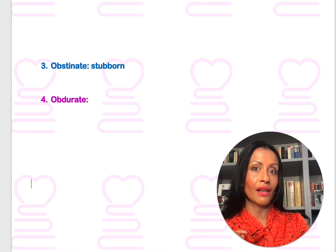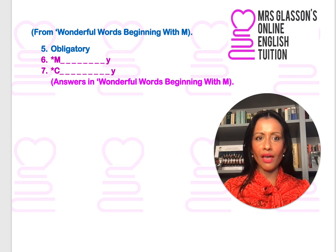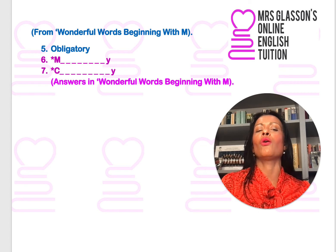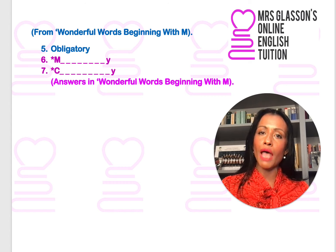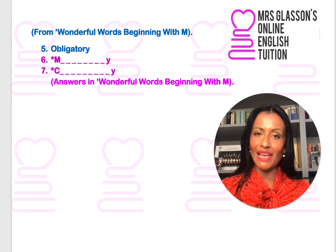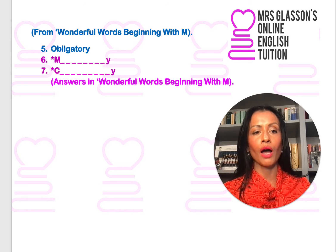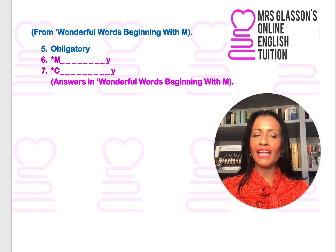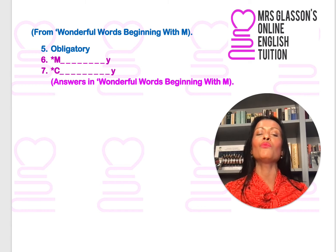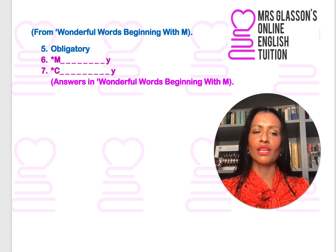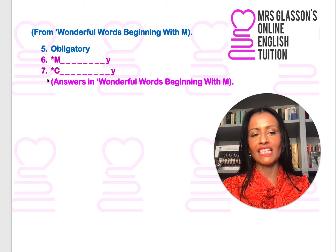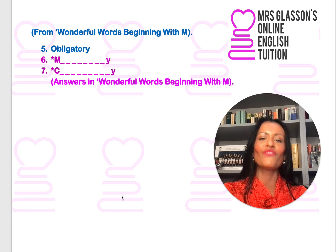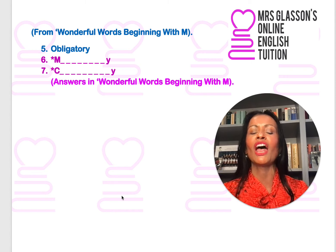But that was at the start of the novella. Let's end now with some proactive learning and reinforcement of vocabulary I have taught you already. Obligatory — do you remember that word? It's in Wonderful Words beginning with M. Two synonyms for obligatory: one begins with M and ends in Y, and the other begins with C and ends in Y. If you haven't seen Wonderful Words beginning with M, watch it now. If you have and can't remember, go back and watch, and make sure you're writing these wonderful words down. The answers are in Wonderful Words beginning with M.